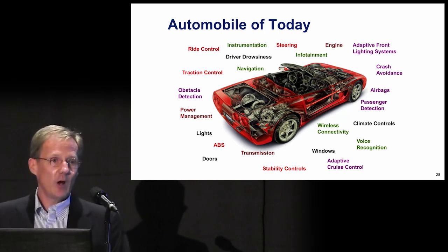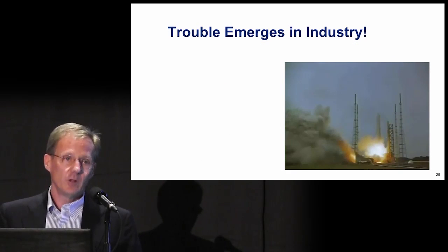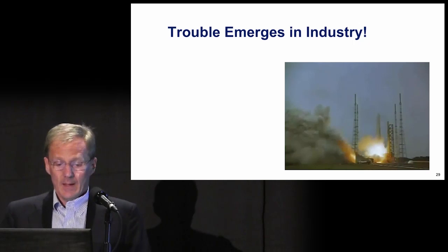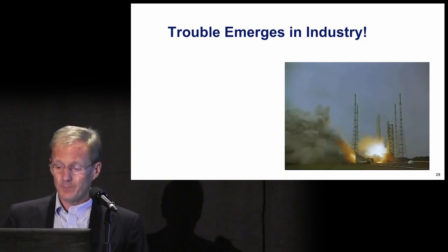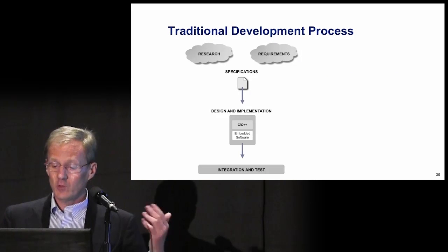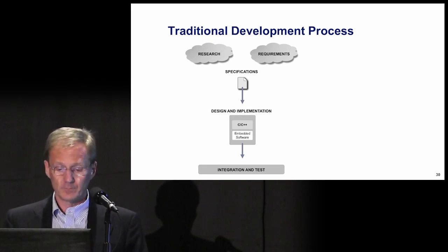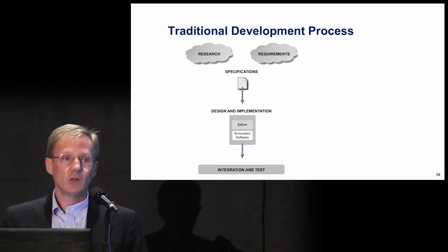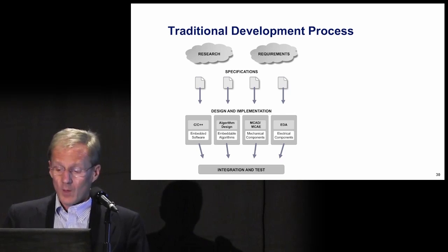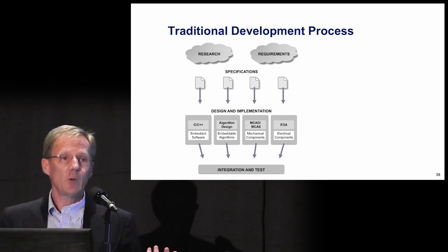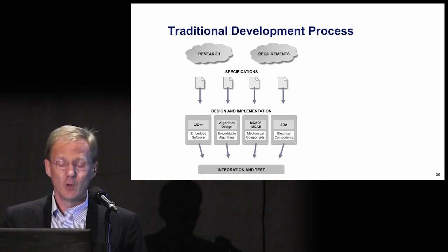During that transformation, however, trouble emerged in industry. The traditional development process includes requirements, specifications, design, implementation, and test. Typically, the software algorithms, mechanical, and electrical components were separately designed. The traditional development process quickly ran into problems from the growth in software complexity that occurred over this time interval.